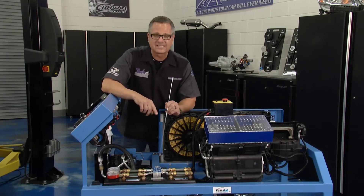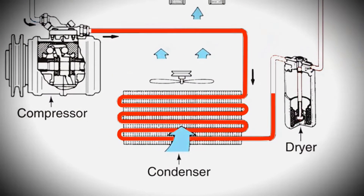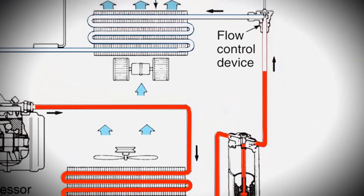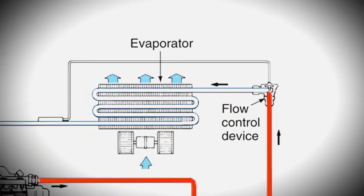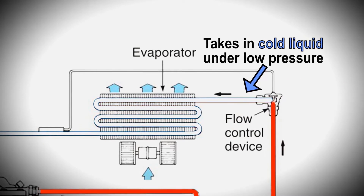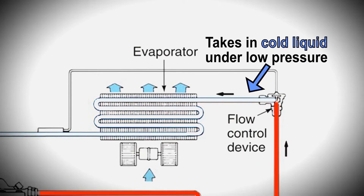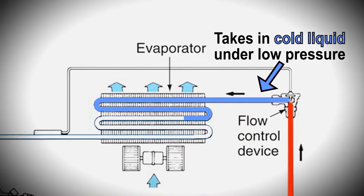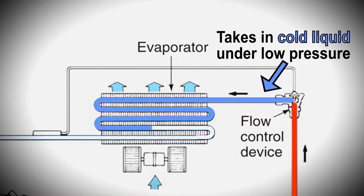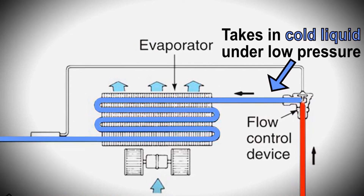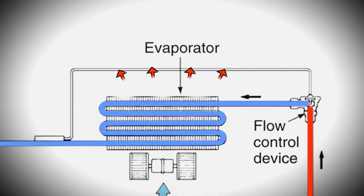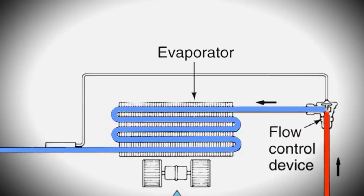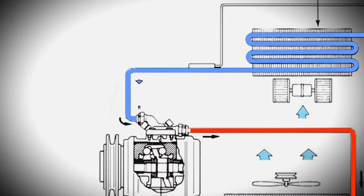After that, we're going to take the refrigerant as a low-pressure, very cold liquid and bring it into the evaporator. The evaporator is located inside the car. That evaporator is going to have hot air from inside the car blown across it — it's going to boil off. So it turns into a gas, going from a low-pressure liquid to a low-pressure gas, and then returns back to the compressor.